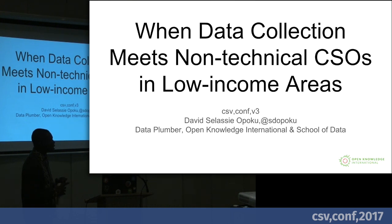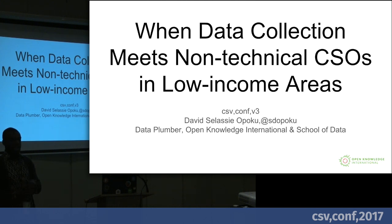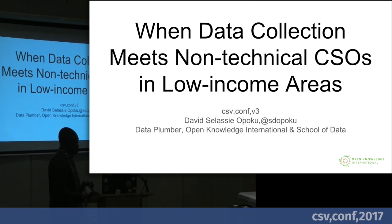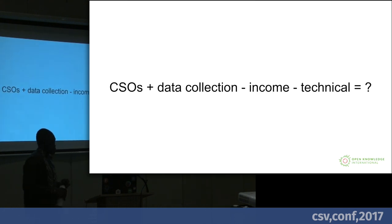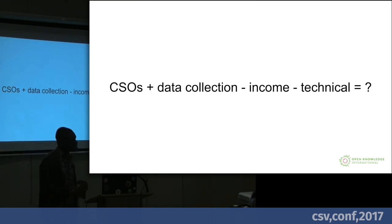When we talk about open data, there's this glamorous feel to it — data journalism — which has value. But how does that really look on the ground, particularly when you're talking about low-income areas? How can we talk about the realities and the lessons and have a real conversation about how to move this forward? If you want to be nerdy or more mathematical, my talk can be described this way: CSOs plus data collection minus income minus technical.